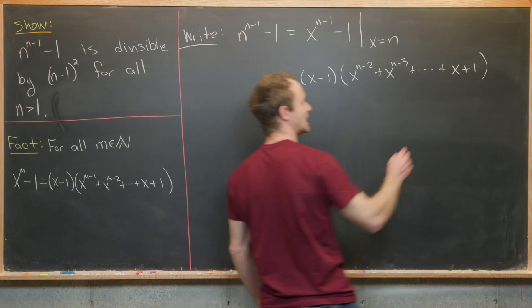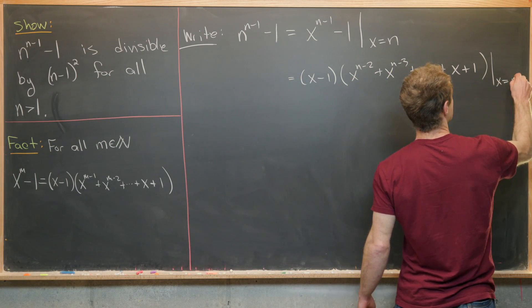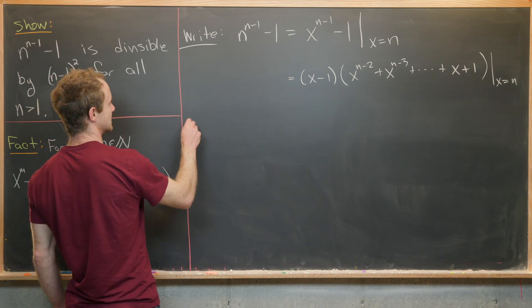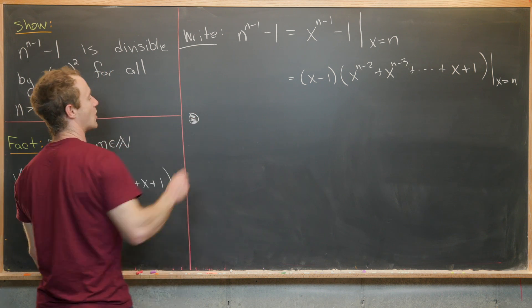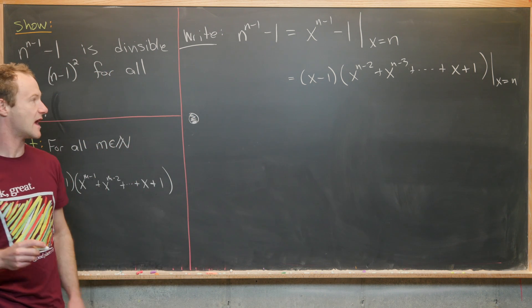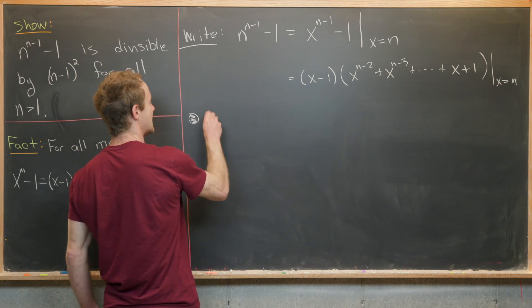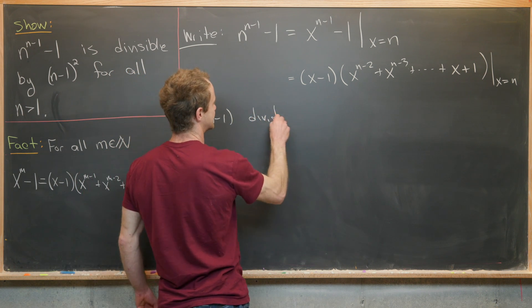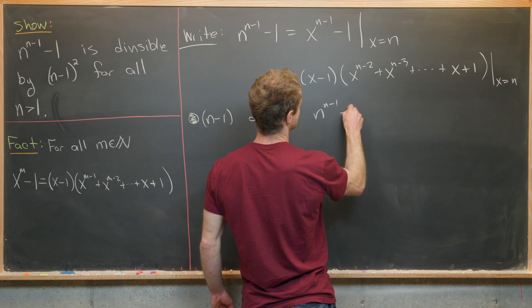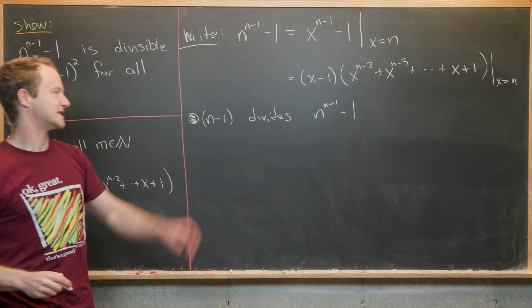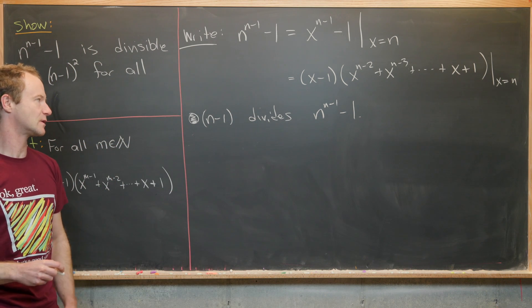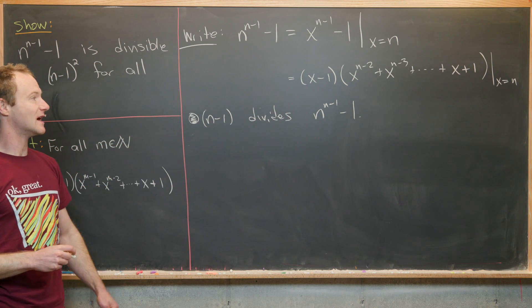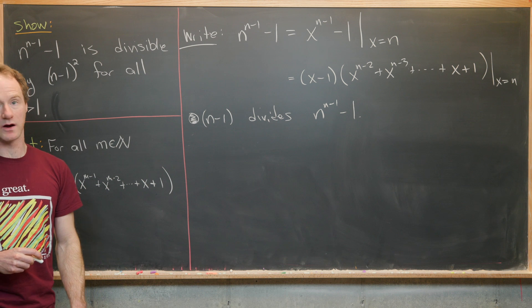Evaluating at x equals n, we see immediately a partial solution: n minus 1 divides n to the n minus 1 minus 1. In other words, n to the n minus 1 minus 1 is divisible by n minus 1, but maybe not n minus 1 squared.